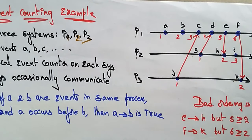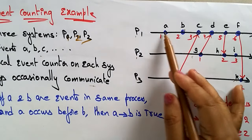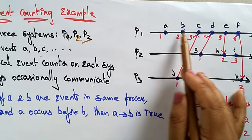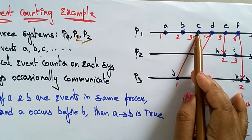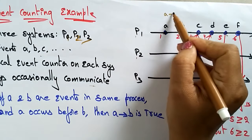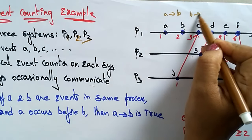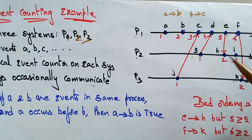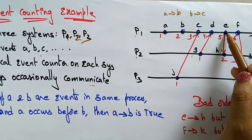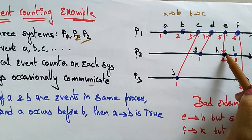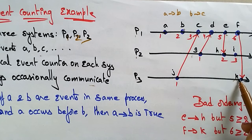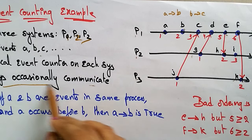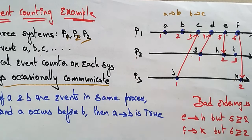The local event counters on each system — systems occasionally communicate. First A happens, next B, next C, next D, next E — so A → B → C like that. Occasionally they communicate: E communicates to event H which is in process P2, and F communicates with event K which is in system P3. Like that, systems occasionally communicate.